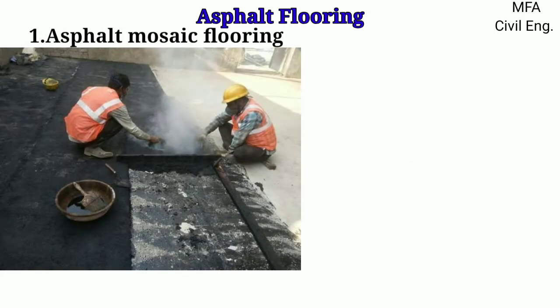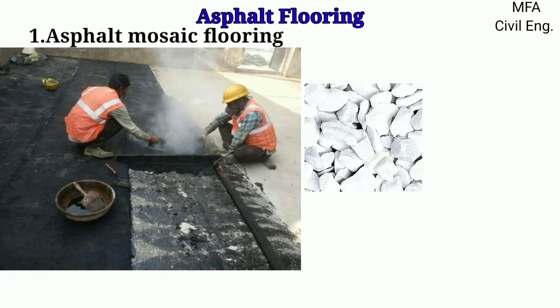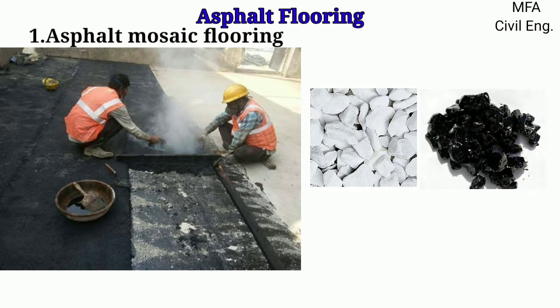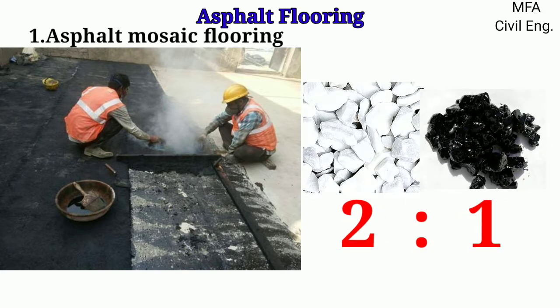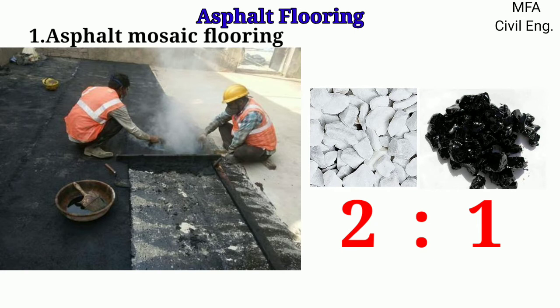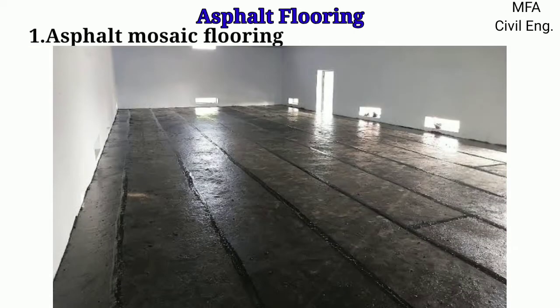Asphalt Mosaic is a mixture of marble chips and asphalt taken in a proportion of 2:1, that is two parts of marble chips and one part of asphalt. This mixture is laid in a continuous sheet in a hot condition. The asphalt used in such flooring can be black in color or can be in any other suitable color.